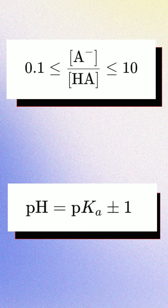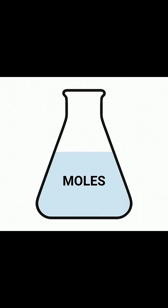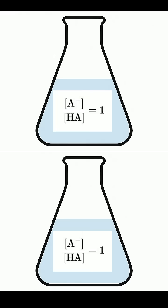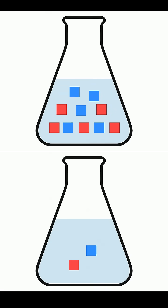The second part is about how much of the buffer components you actually have. And here, we're talking moles, not just concentrations. Let's say you've got two buffer solutions. Both have the same 1 to 1 ratio of HA to its conjugate base, so they start with the same pH. But in one solution, you've got 5 moles of each component. In the other, only 1 mole of each.